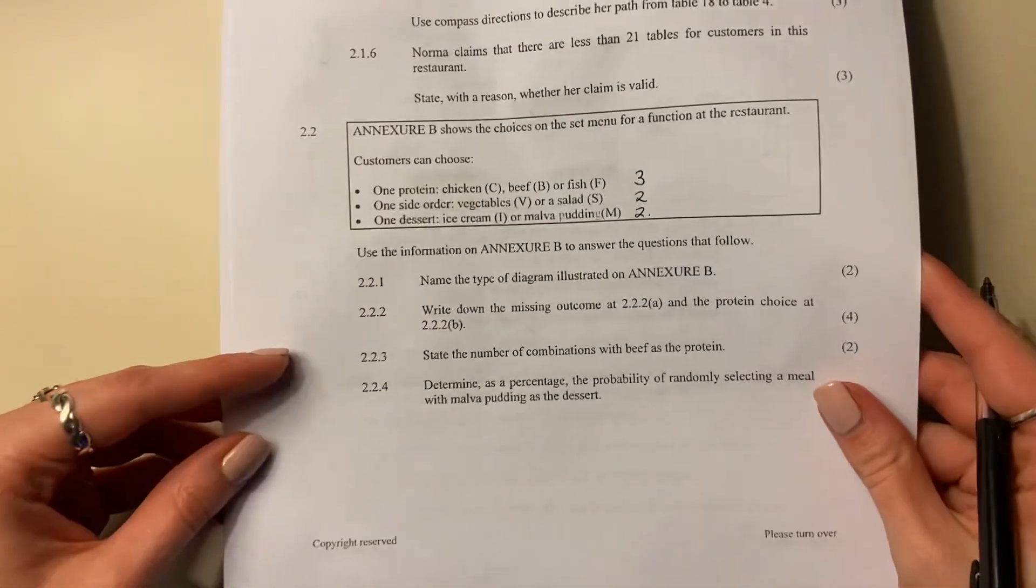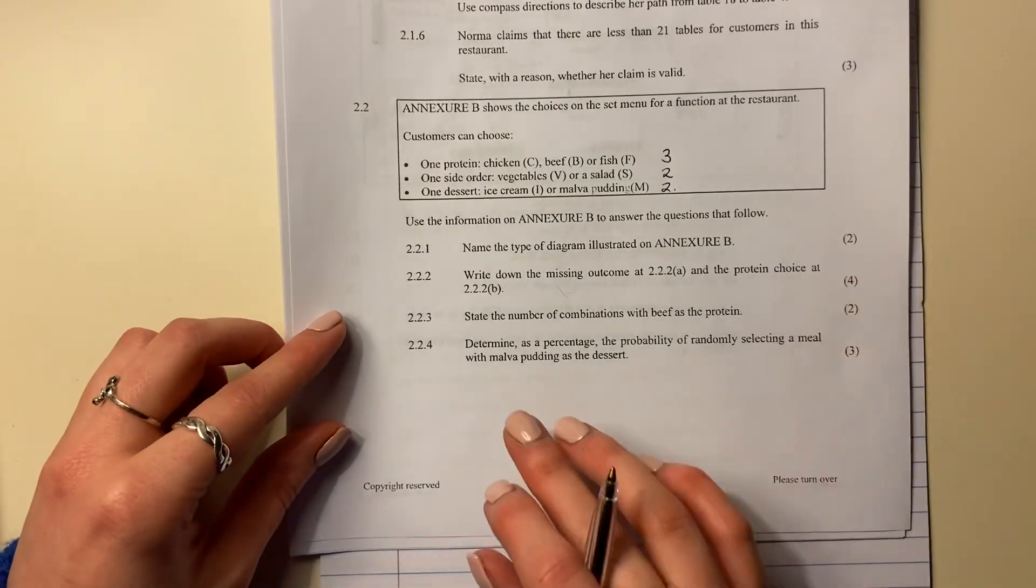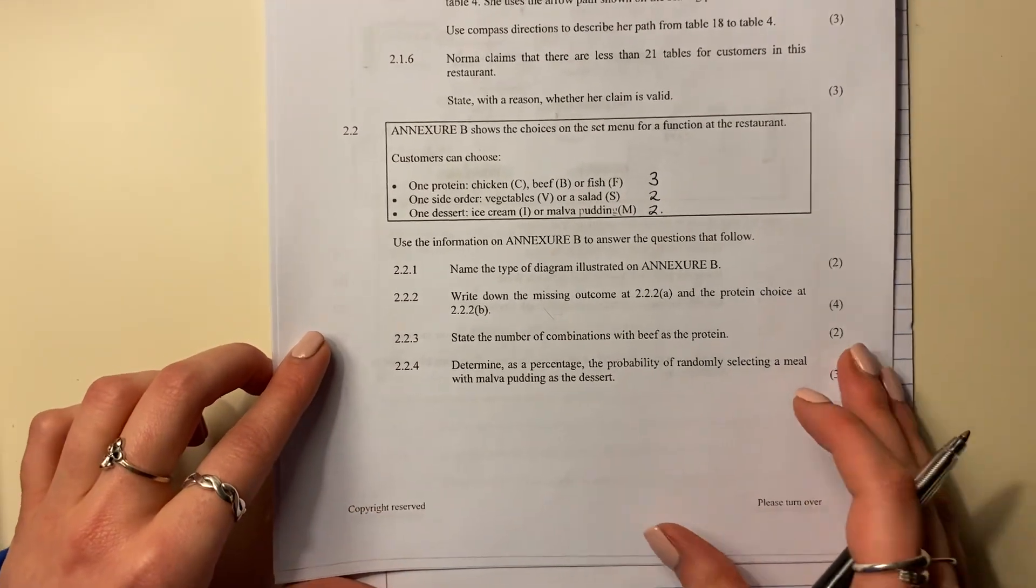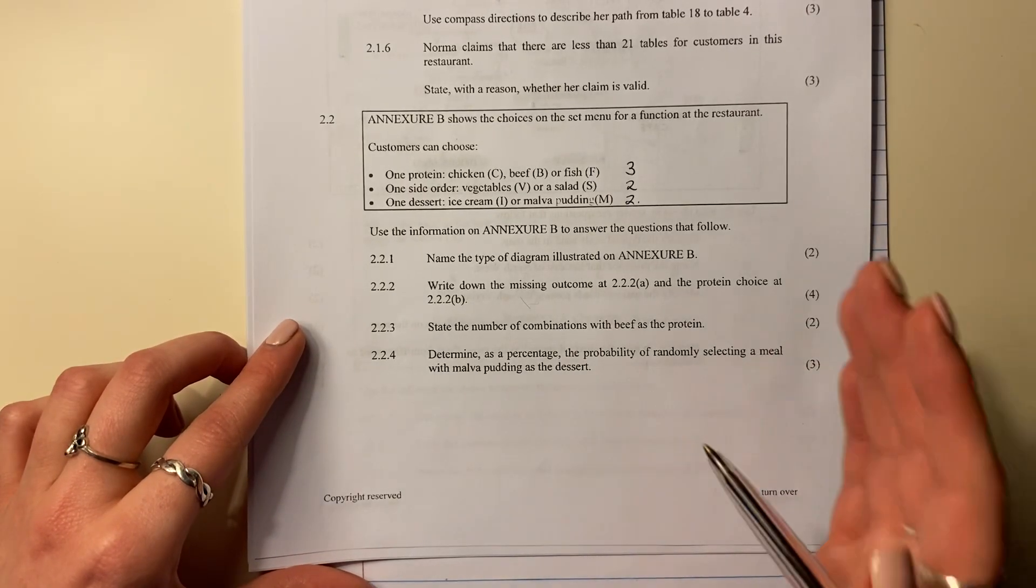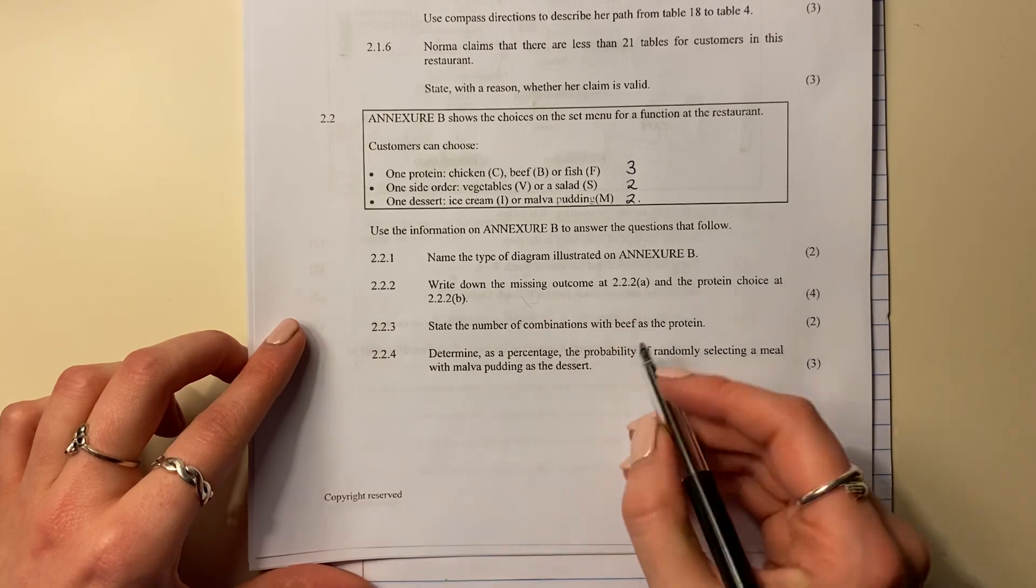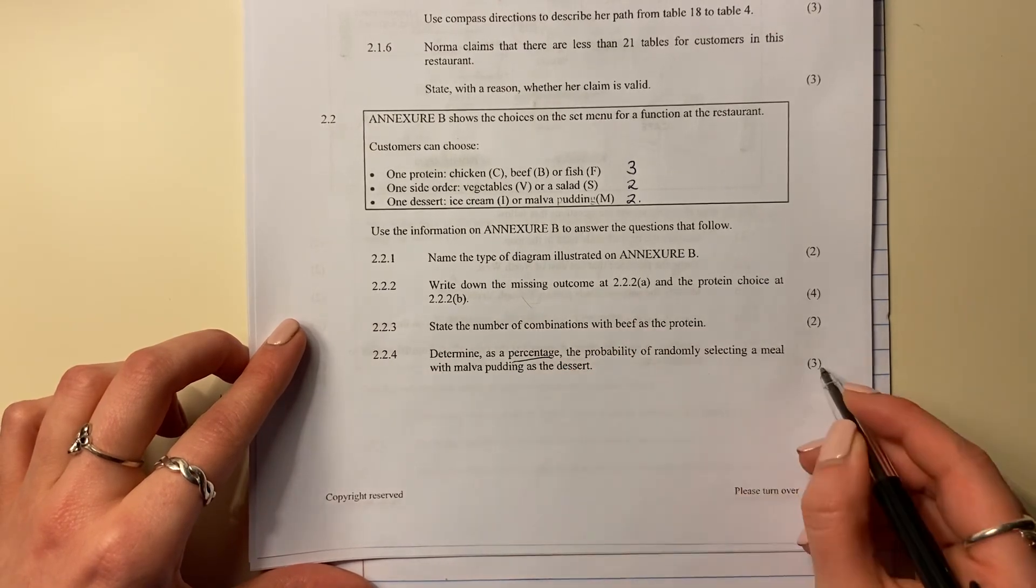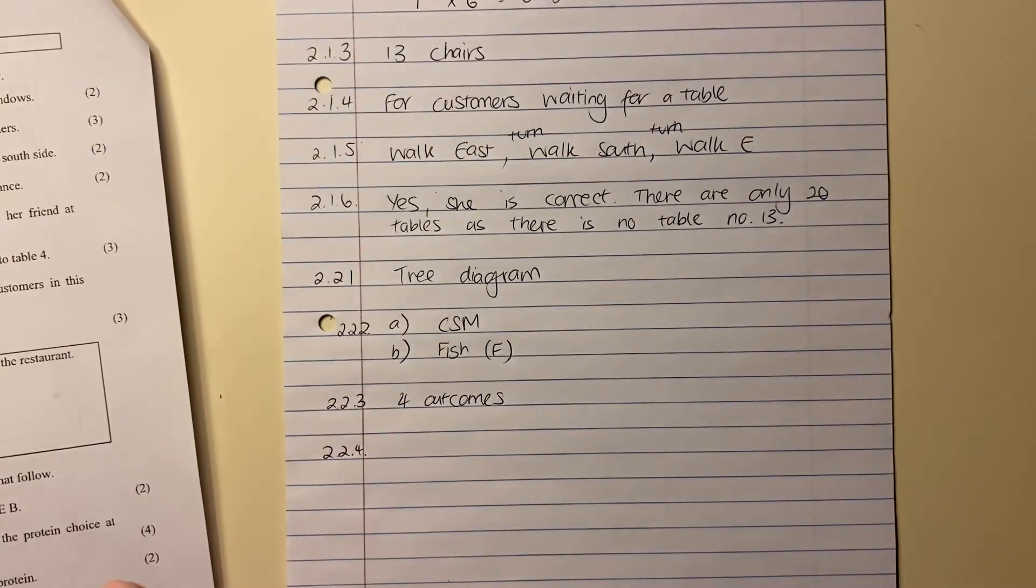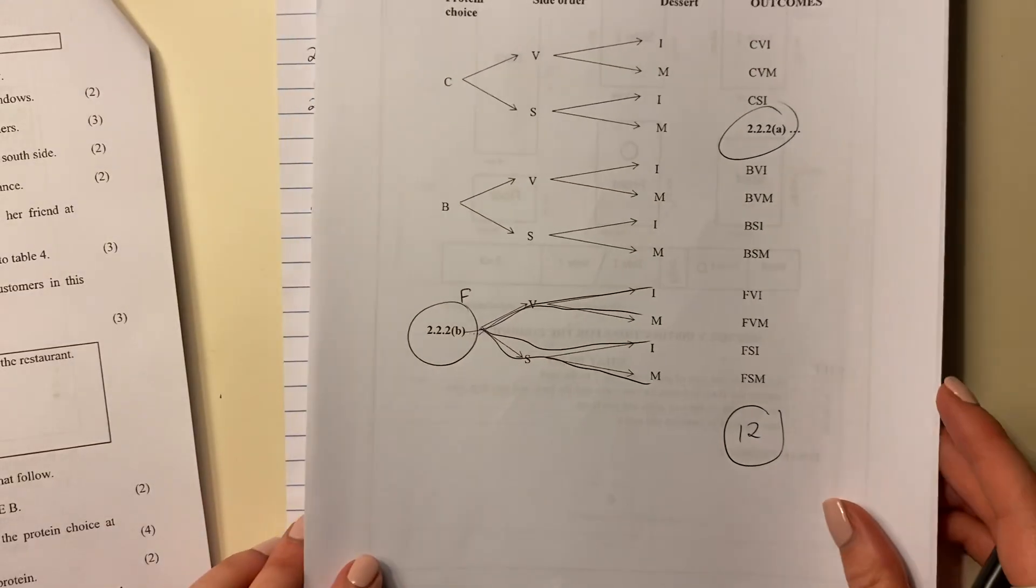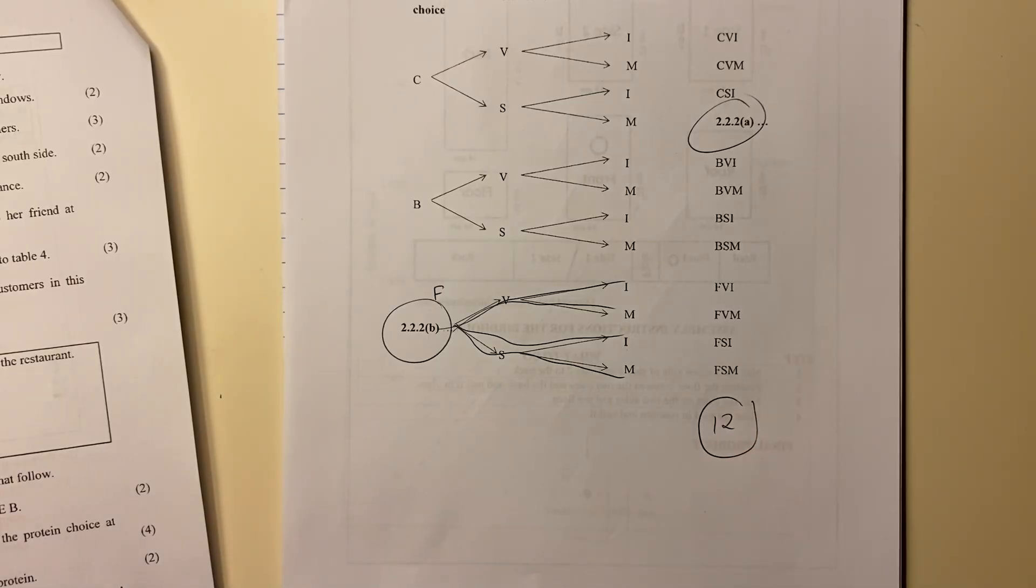Let's do the last question for this. It says, determine as a percentage the probability of randomly selecting a meal with Malva pudding as the dessert. So probability, and I want it as a percentage, three marks. Let's make sure that we do this correctly. So let's go back over here and make sure that we get this.